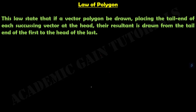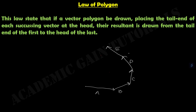Suppose A, B, C, D, and E are 5 vectors and their resultant vector is to be found.